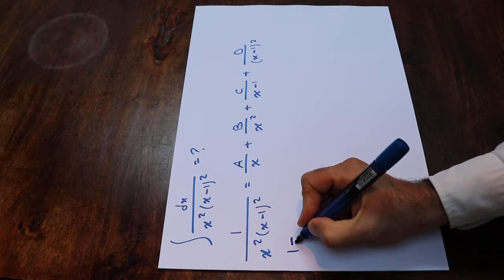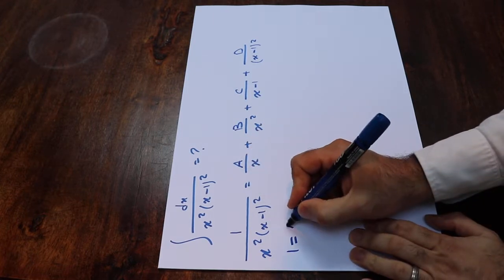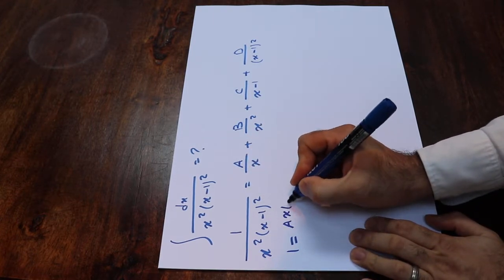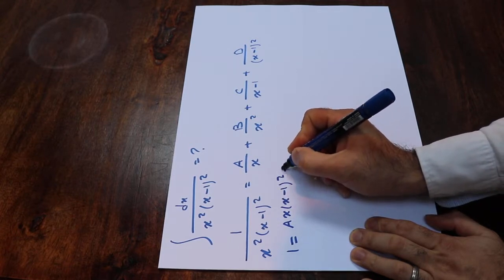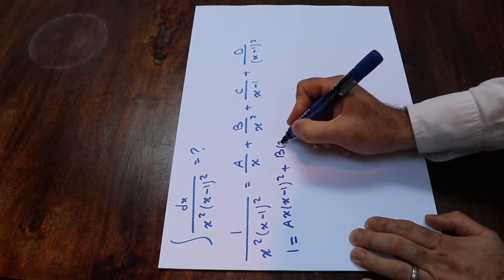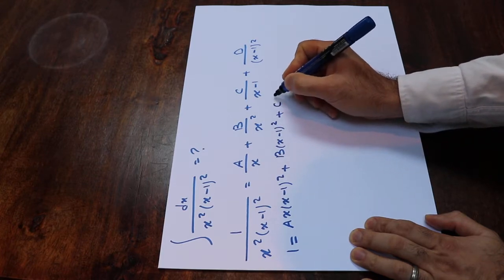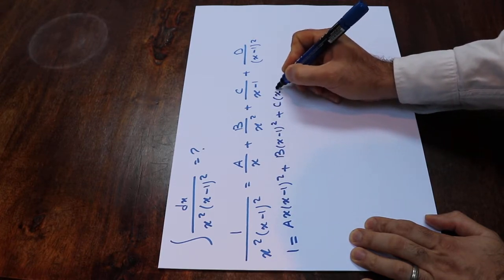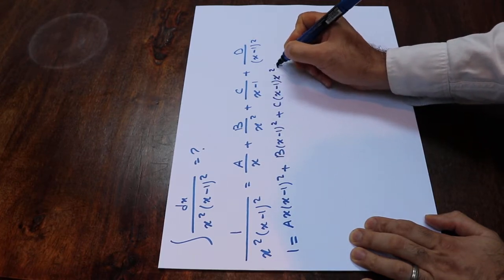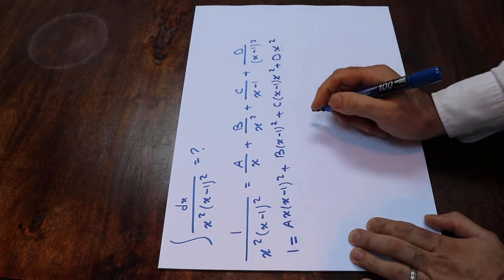Therefore you can conclude that 1 will be equal to A times x times (x minus 1)² plus B times (x minus 1)² plus C times (x minus 1) times x² plus D times x².